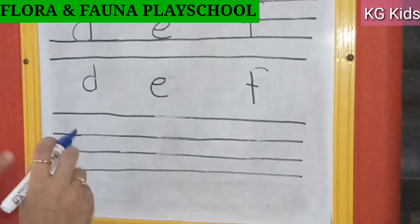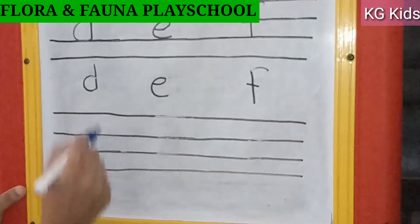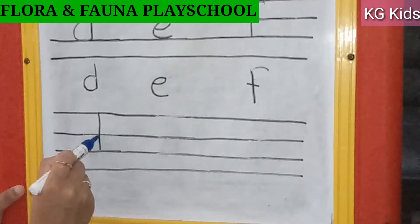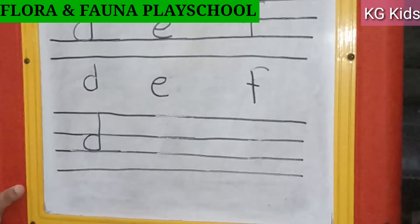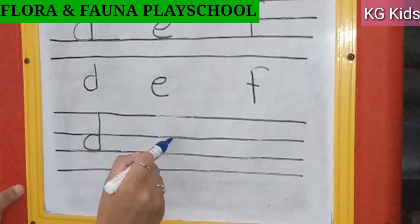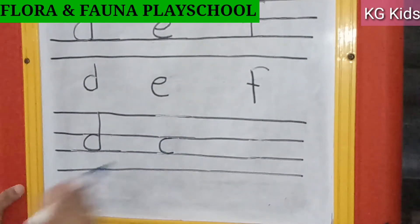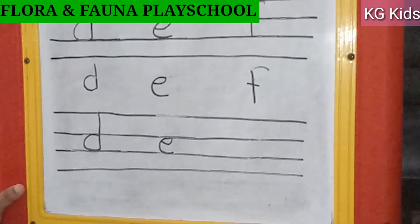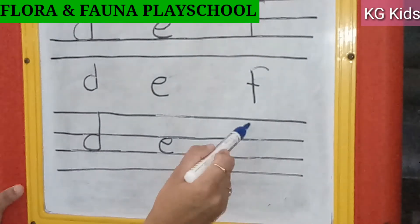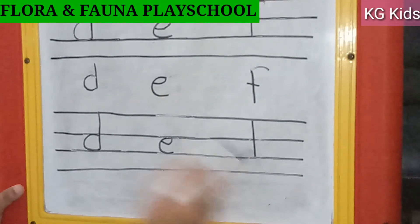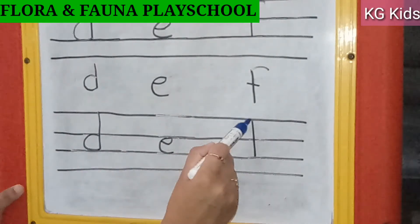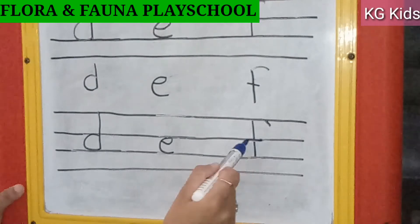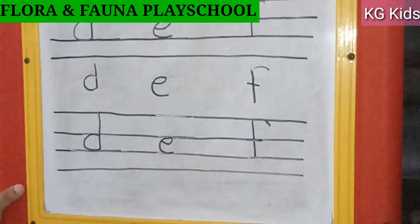So once more — D: standing line and a small semi-circle. Same way, small semi-circle and then join it, join one end of it. And for F: one standing line, small gap, and we will touch it.